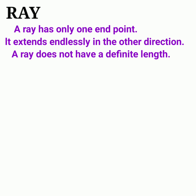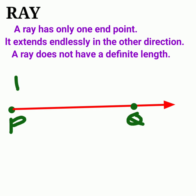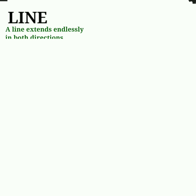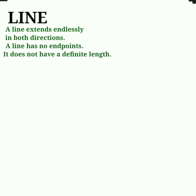A ray has only one endpoint; it extends endlessly in the other direction. A ray does not have a definite length. Example: ray PQ.